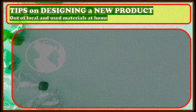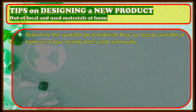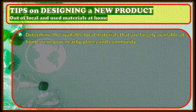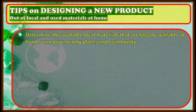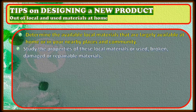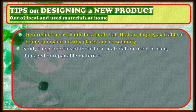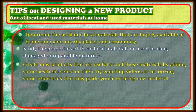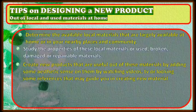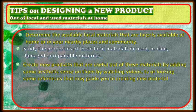We have tips on designing a new product out of local and used materials at home. Tip number one: determine the available local materials that are largely available at home or in your nearby places and community. Next, study the properties of these local materials or use broken, damaged, or repairable materials. Another tip is to create new products that are useful out of these materials by adding aesthetic touches, watching videos, or looking at references that may guide you in creating new materials.